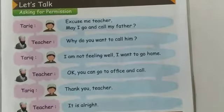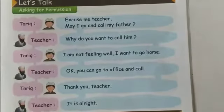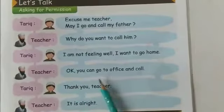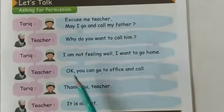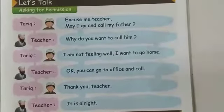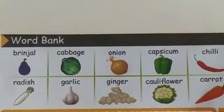Open your book at page number 33 and today we are going to do the activity 'Let's Talk.' In this activity, we are going to learn how to ask for permission in English. Here we have Tariq and teacher in the book, but we are going to switch their roles because we have Amina with us and she is going to perform this activity with me. So let's start.